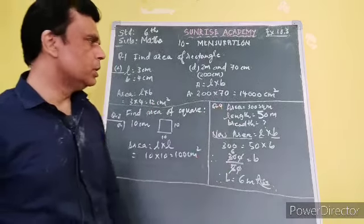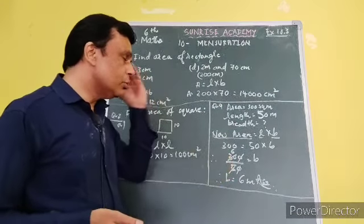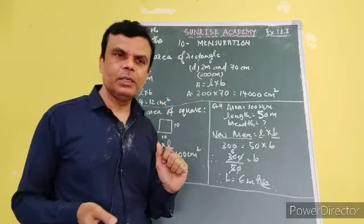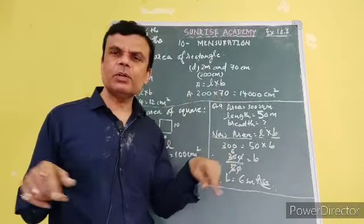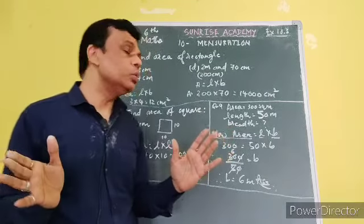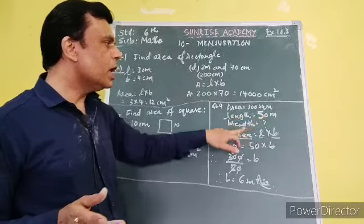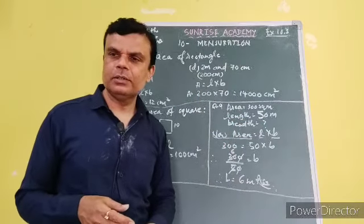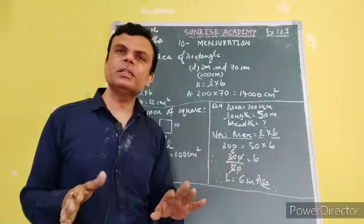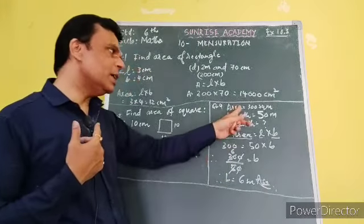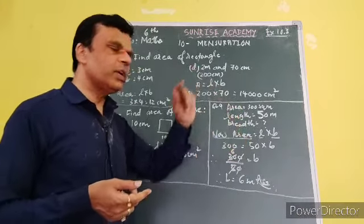And now, question number 4. There is a little difference in this problem. There is a rectangle-shaped object. Its area is 300 square meters. The length is 50 meters. The breadth needs to be defined. Generally, they give us length and breadth and the area is defined. We have to find them. Here the area is given and the length is given. The breadth needs to be found.